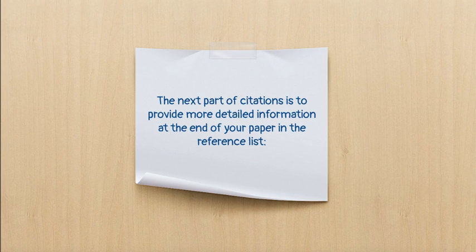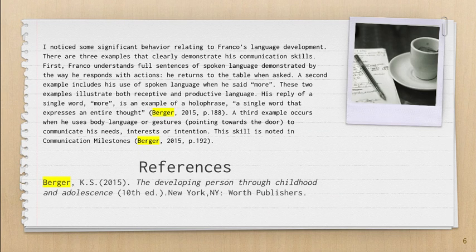The next part of citations is to provide more detailed information at the end of your paper in the reference list. Here, you can see the author's paragraph above and the reference list below. You can see that they integrated their sources into the paragraph and have cited them in their reference list.